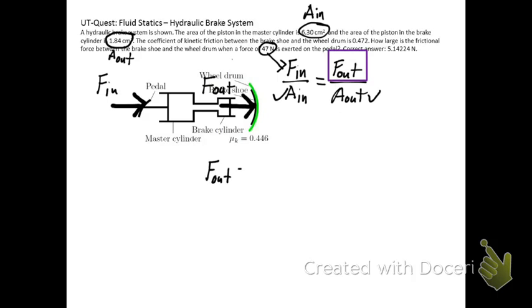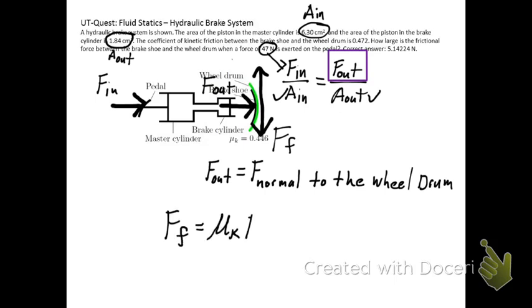Once we have our output force, that becomes the force normal that presses the brake shoe against the wheel drum. And we have force normal and we just compute that force friction as just being mu k times force normal. So that output force becomes our force normal multiplied by mu k, and that gives you the friction force that you are applying to the wheel drum.